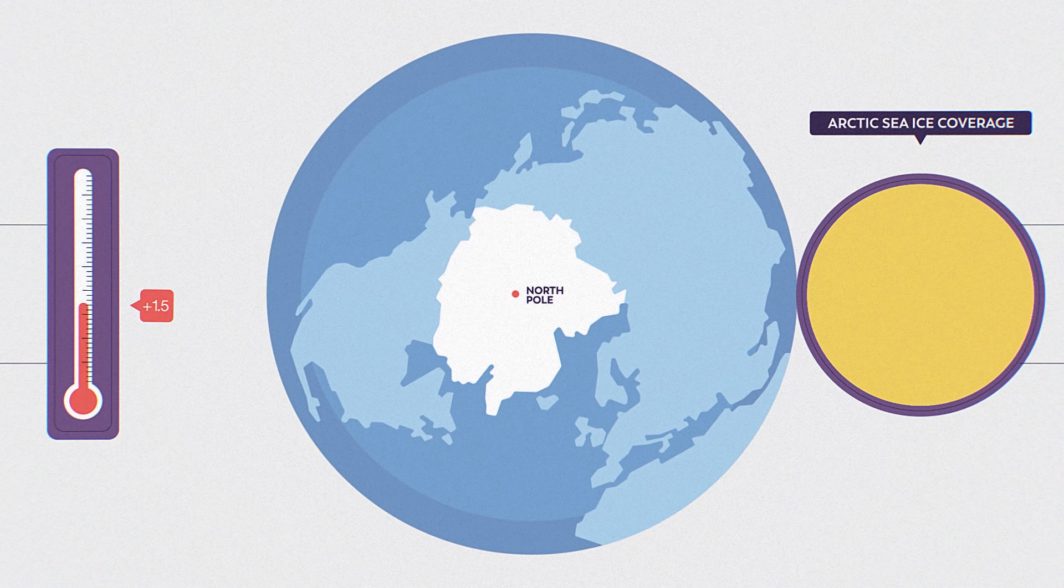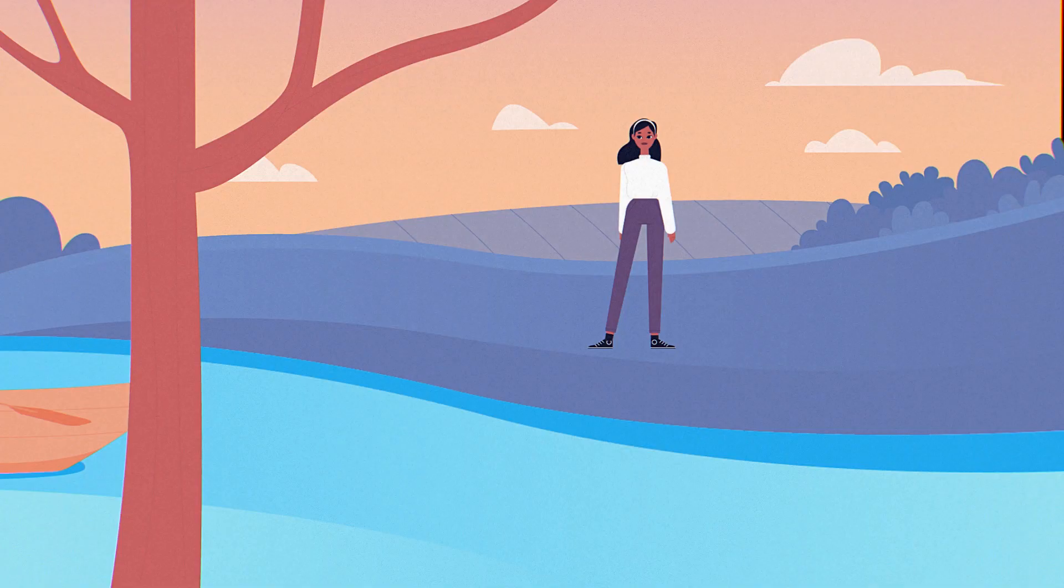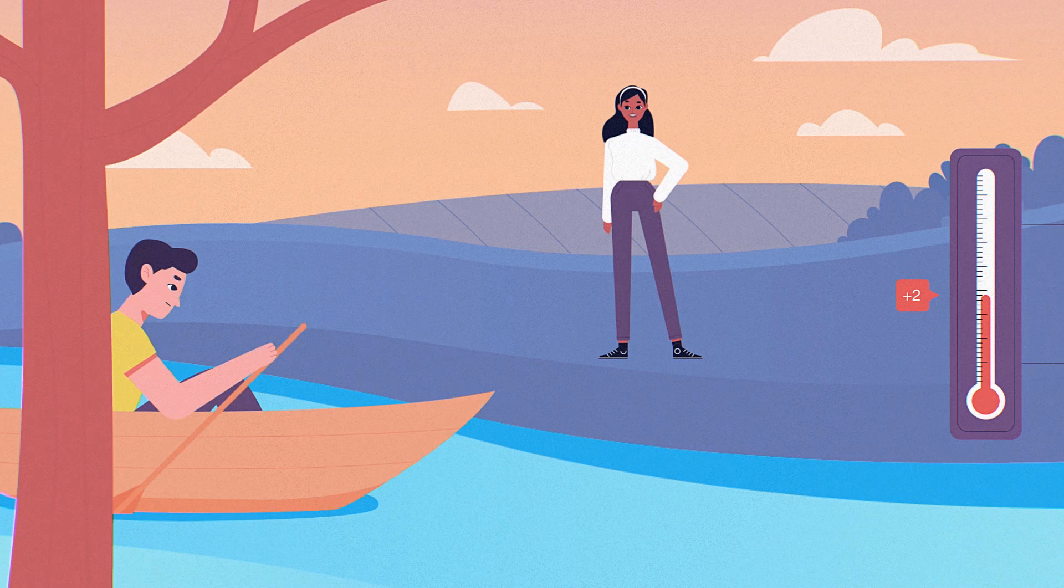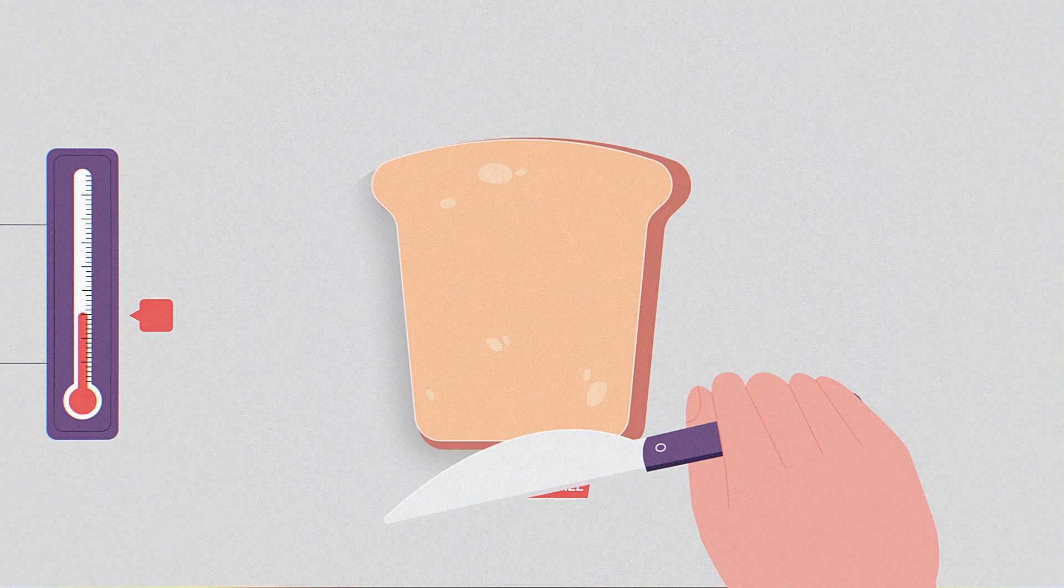If the global average temperature rises by 1.5 degrees, the probability of an ice-free Arctic summer in any given year is about 3 percent. Ice near the poles continues to melt at 2 degrees of warming, adding enough water into the oceans to cause sea levels to rise by 48 centimeters by the year 2100.